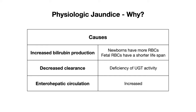A second reason is decreased clearance of bilirubin, due to deficiency of UGT activity. This enzyme is responsible for conjugation of bilirubin, which happens after hepatic uptake of unconjugated bilirubin and prior to biliary excretion of conjugated bilirubin.